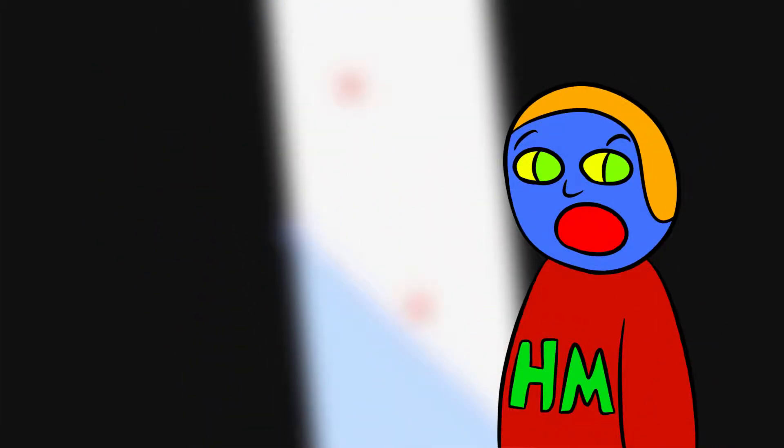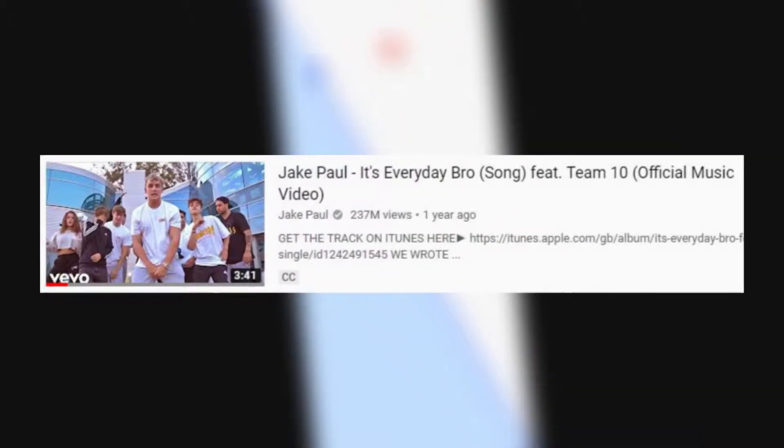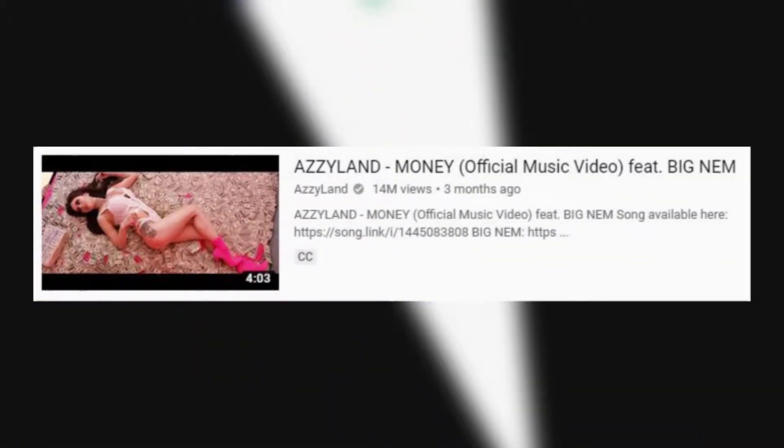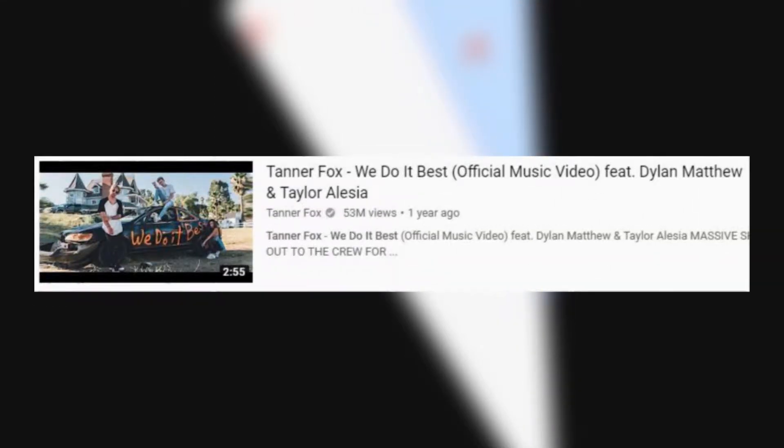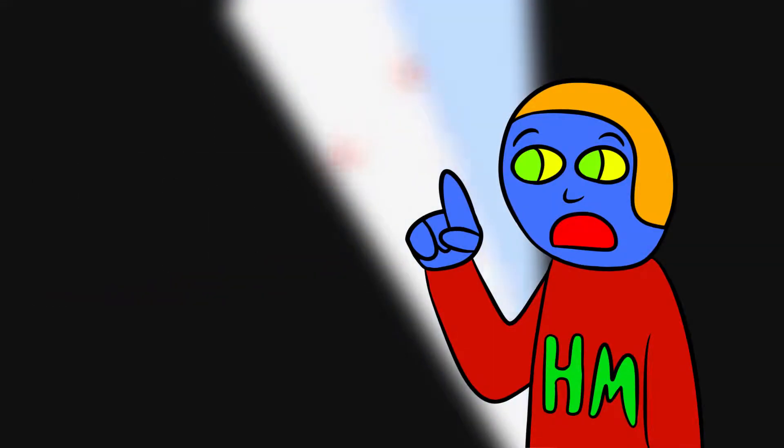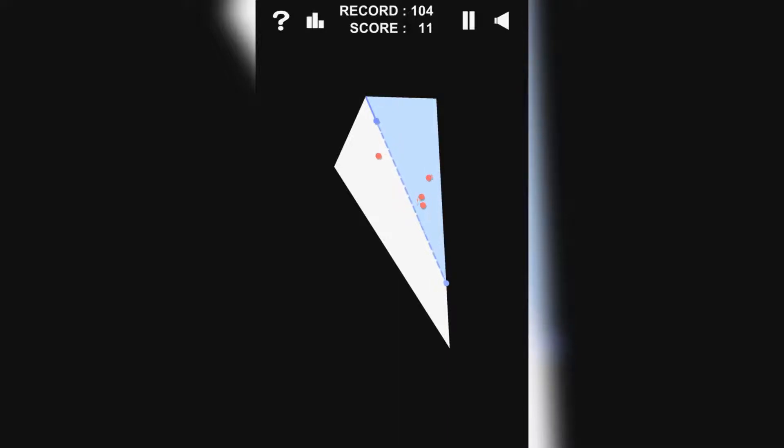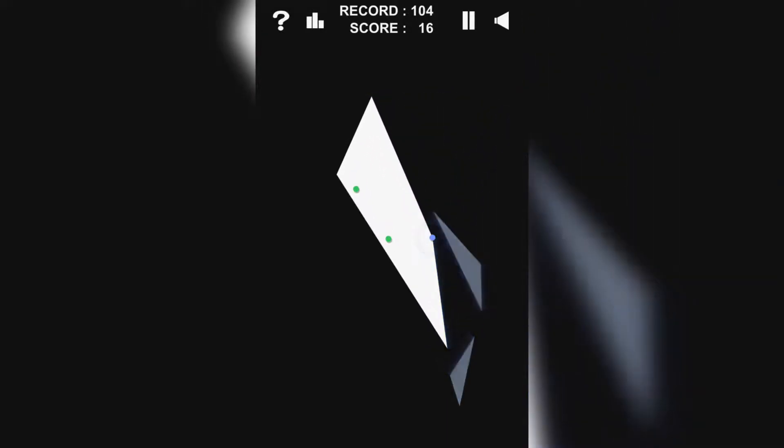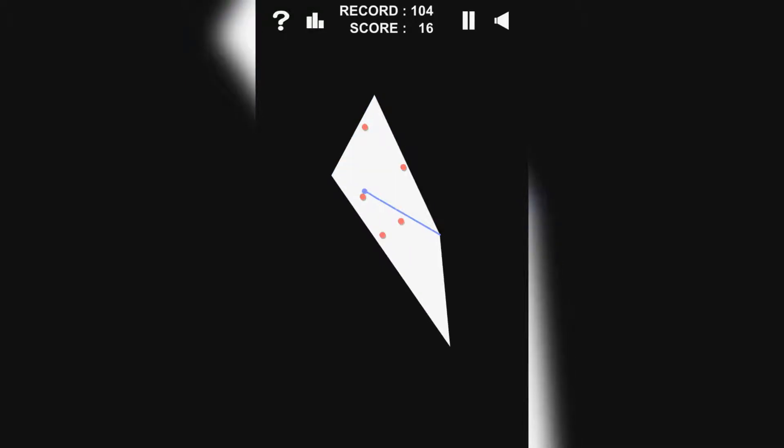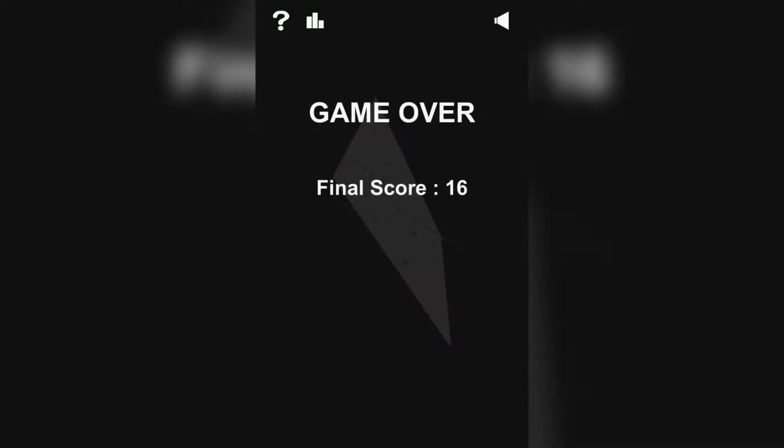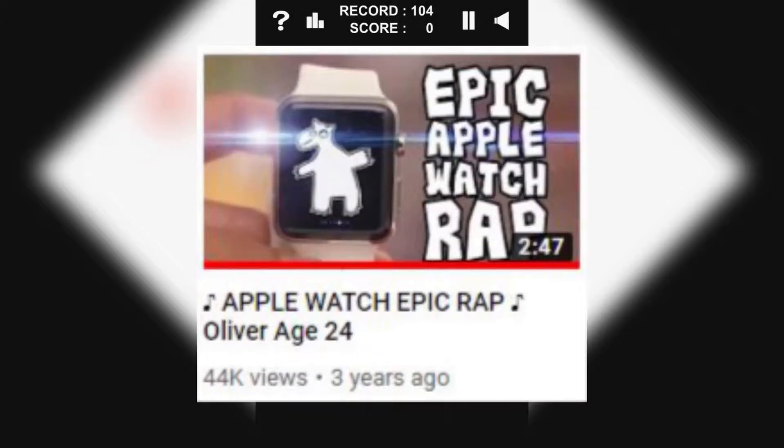Most YouTubers will just make these dumb rap songs like Jake Paul's It's Everyday Bro, or Rice's Money, or Tanner Fox's We Do It Best, or pretty much anyone else. Oliver on the other hand makes more pop or electronic style music. Everyone has their taste in music, but Oliver's music is pretty well received. Some of his songs don't have too many views though, like his Apple Watch rap which only has 44,000 views as of now.